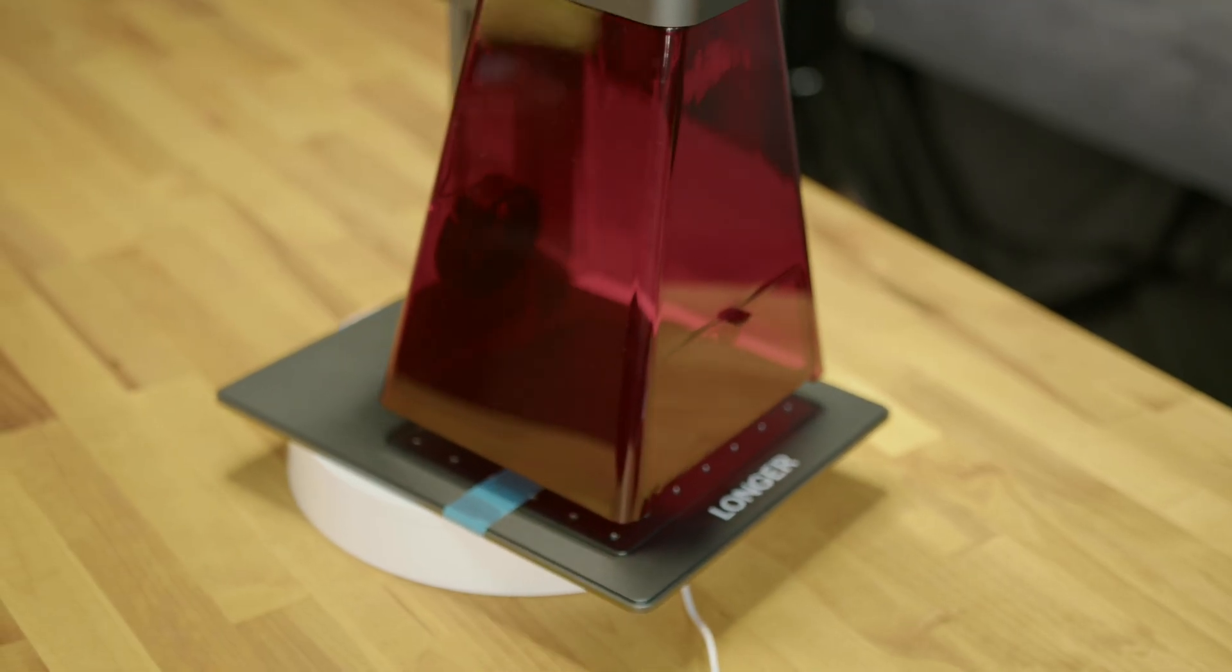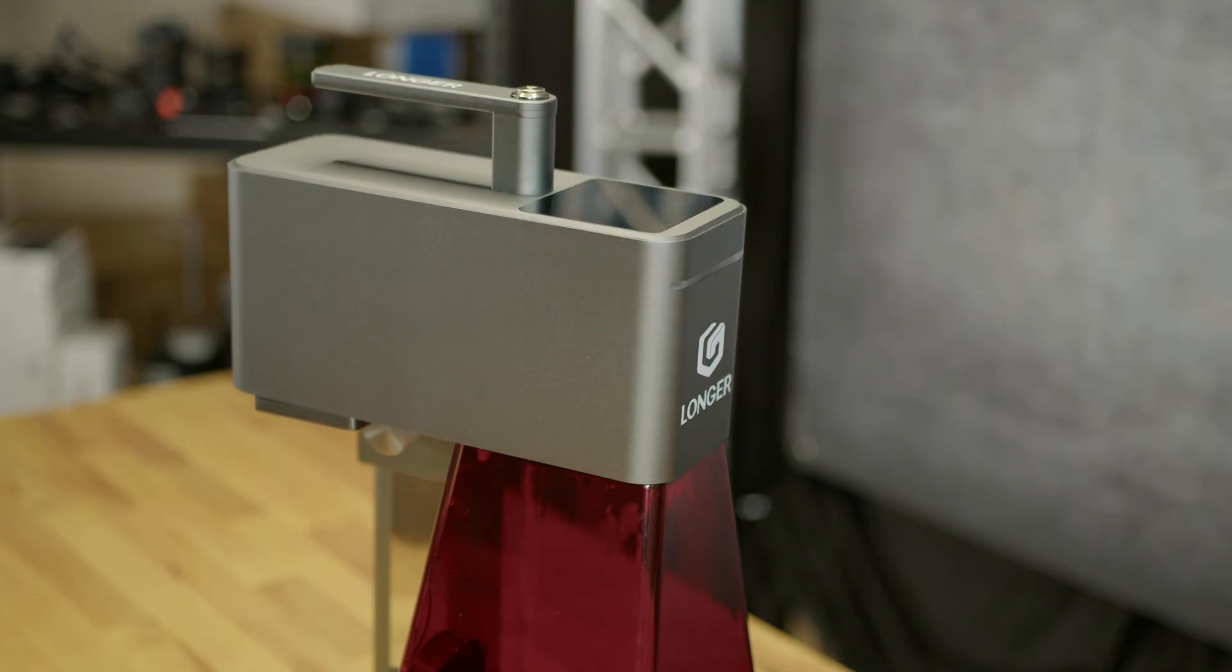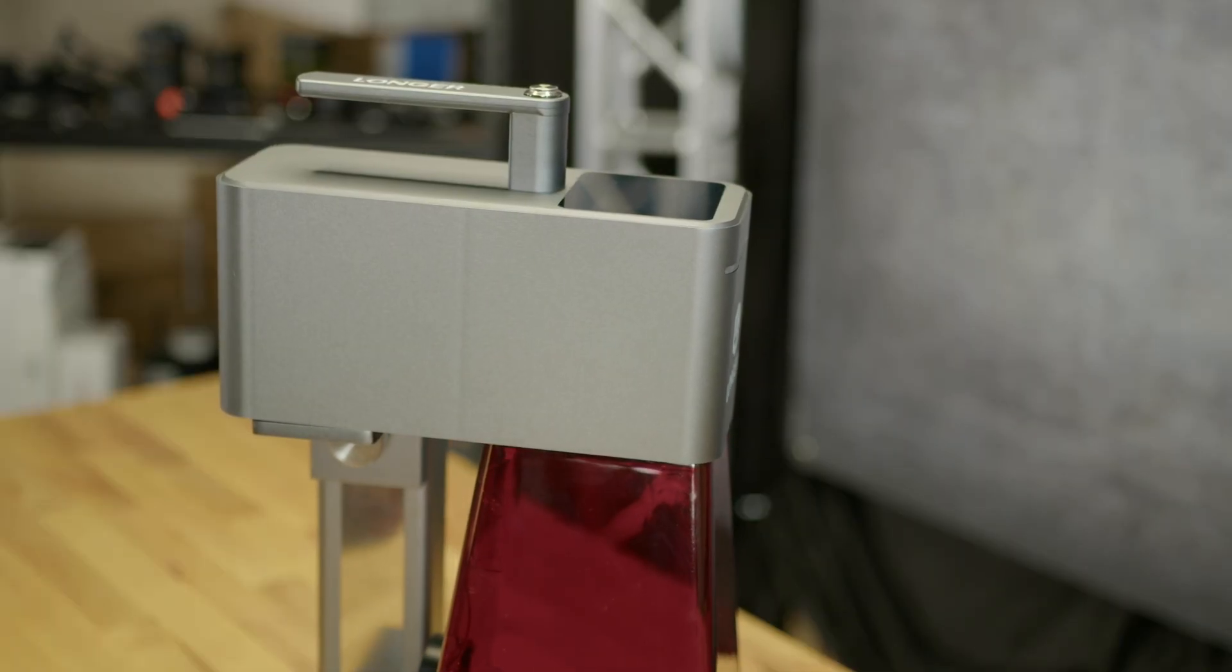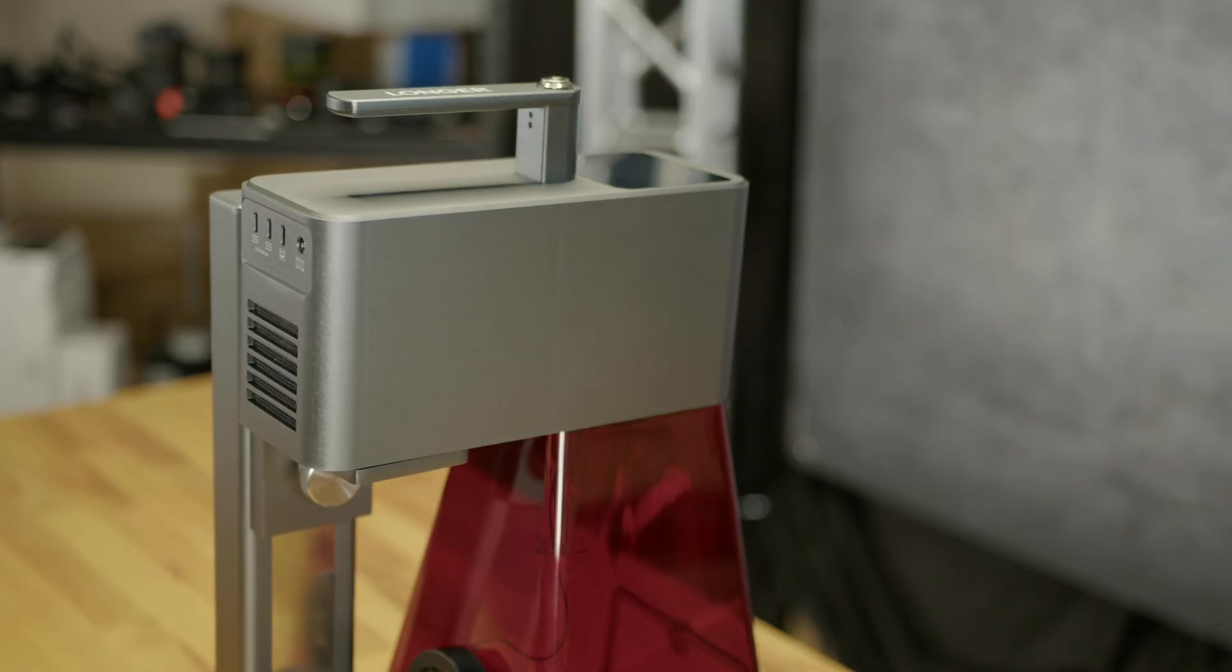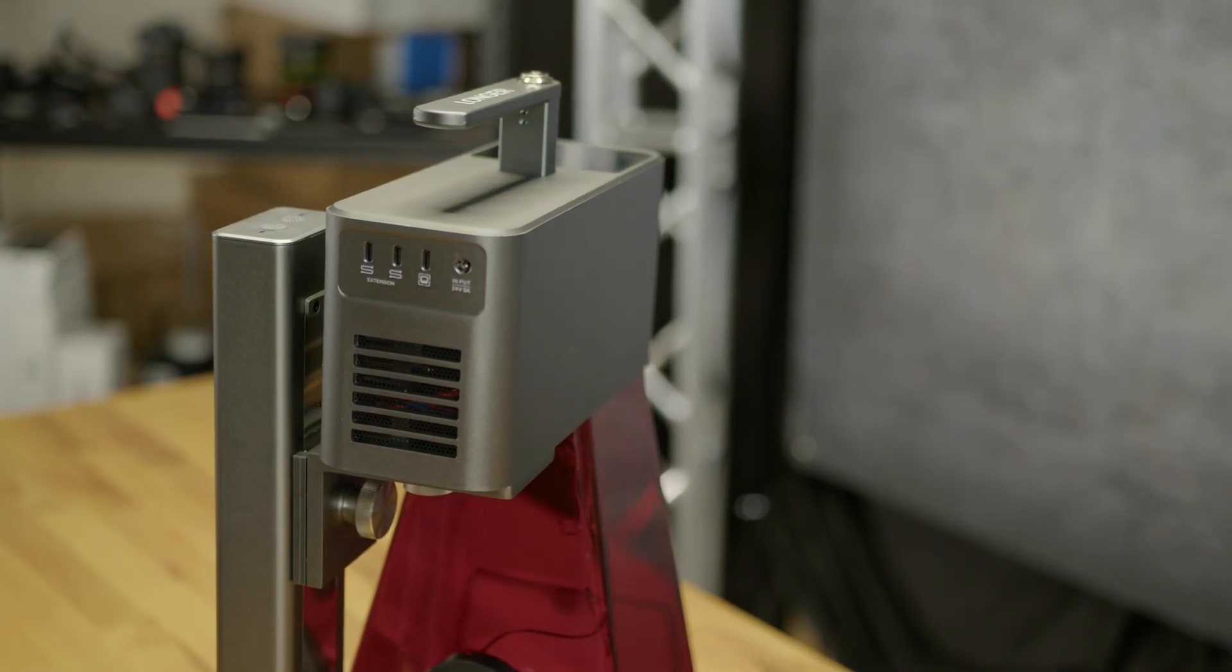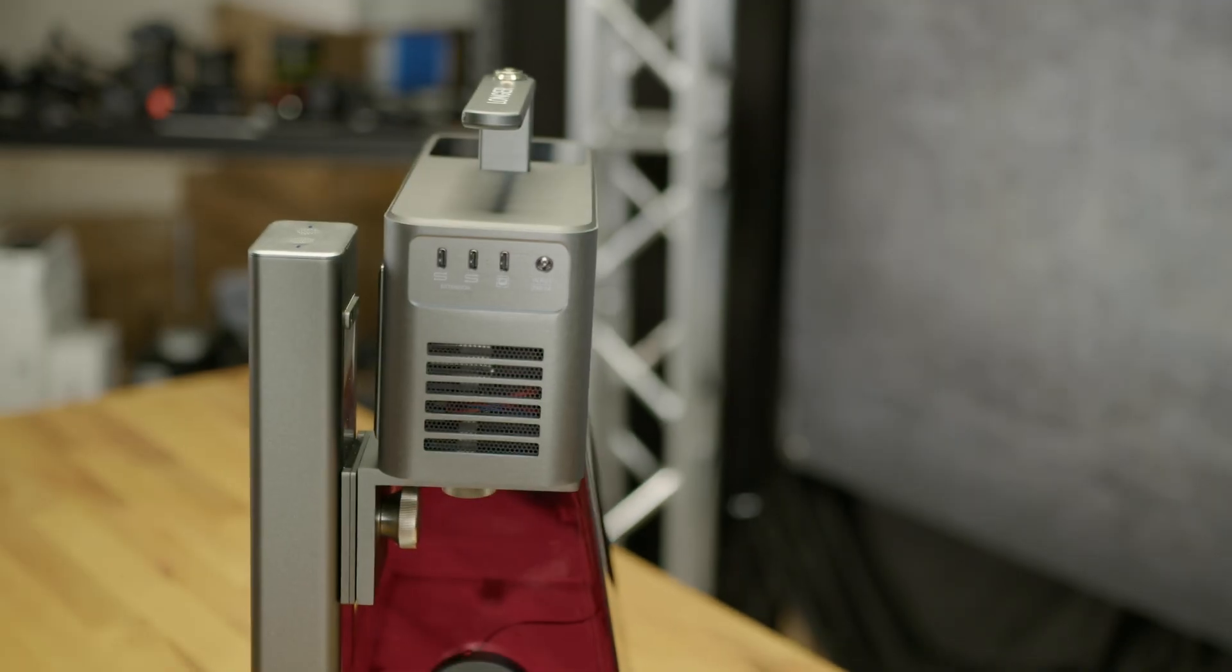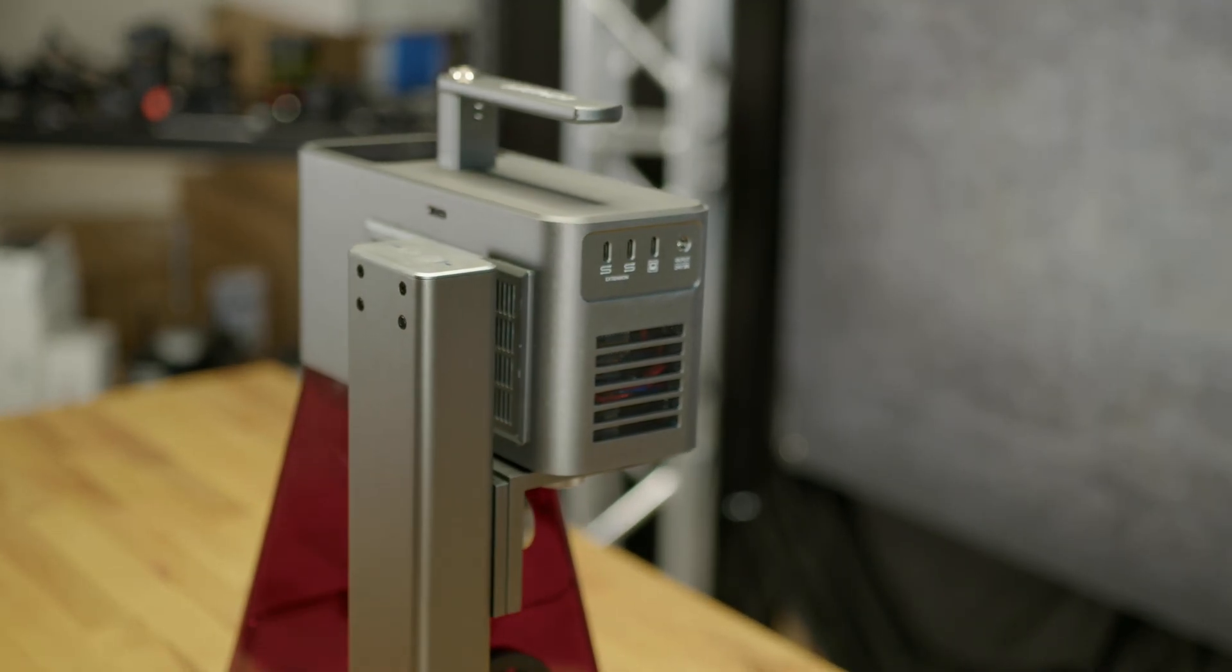So what makes the Longer Nano Duo AI laser engraver special is its built-in AI technology for auto positioning and auto filling to maximize creative efficiency. Now once again, it is a dual laser, so it's a 20 watt blue diode laser and a 2 watt infrared laser, giving it some diversity as far as its cutting needs.